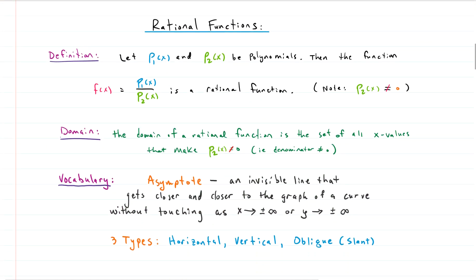Let's talk about rational functions — a quick review. They're pretty simple. The main idea is that a rational function is a function where you have a fraction with a polynomial in the top and a polynomial in the bottom. The only domain restriction is that you cannot have zero in the denominator, so any number that makes the bottom polynomial equal to zero has to be kicked out of the domain. Besides that, it's all real numbers.